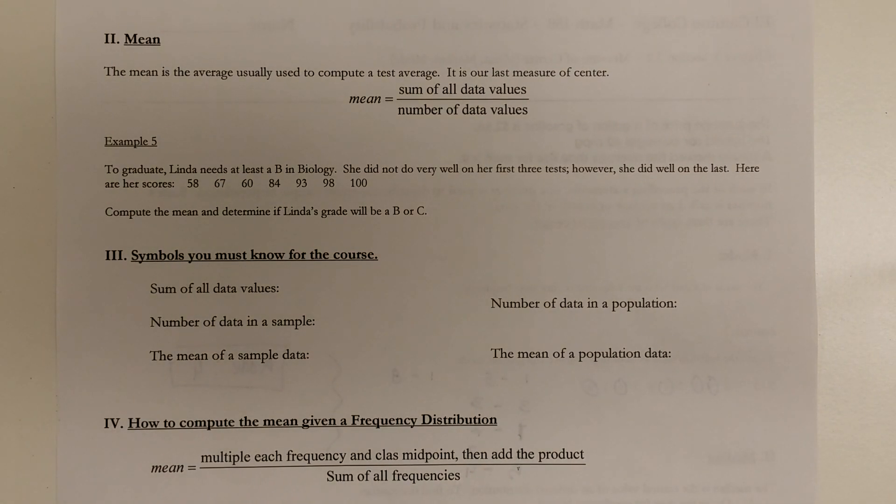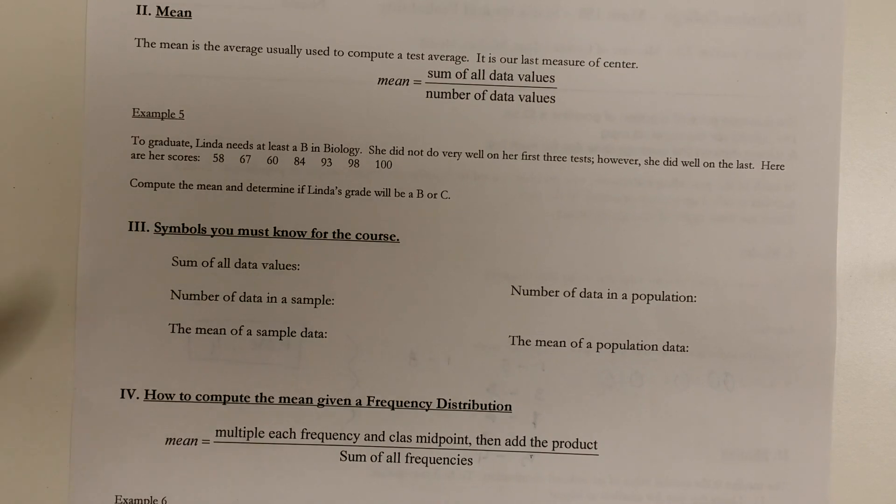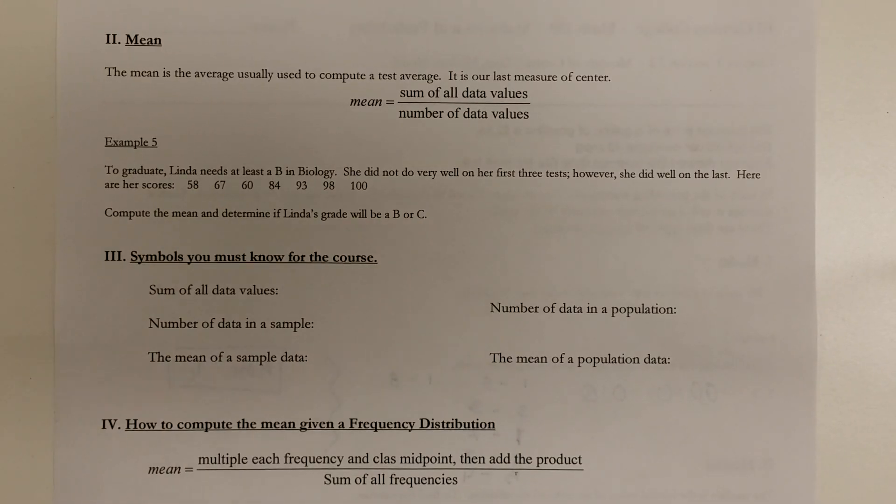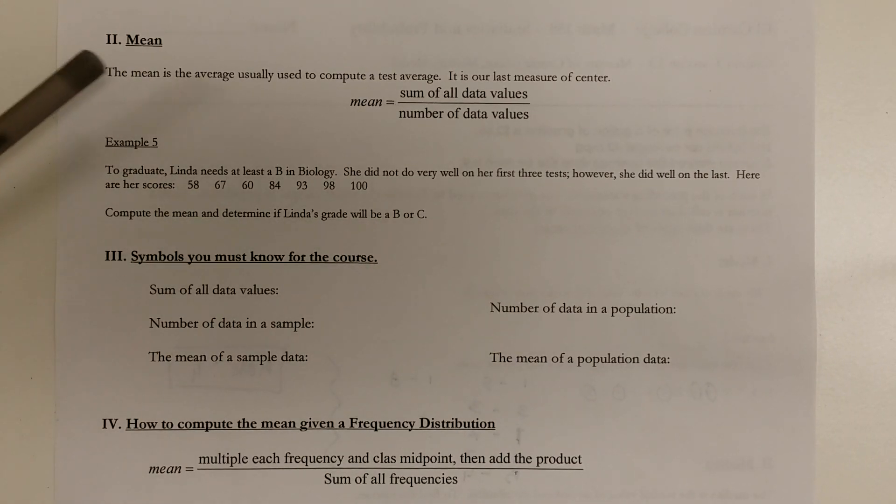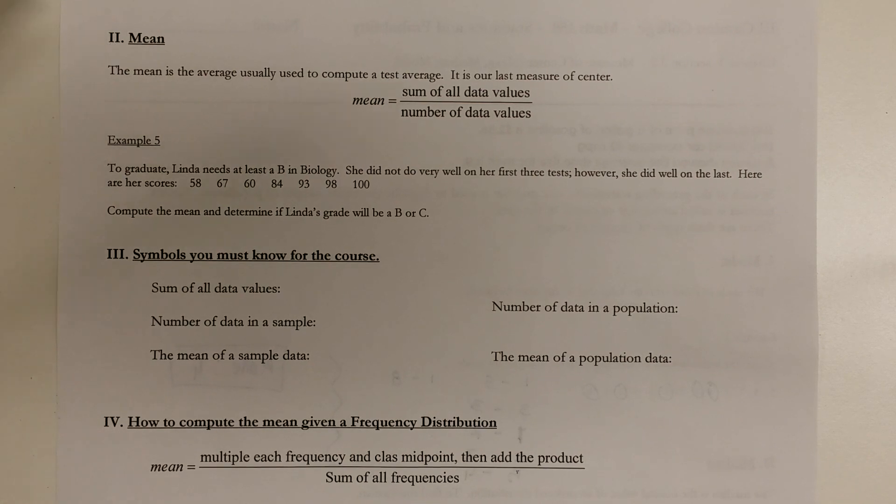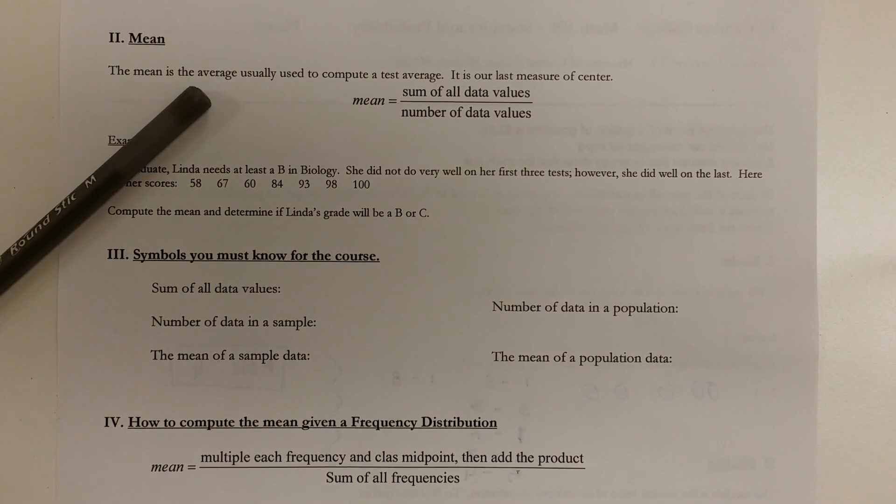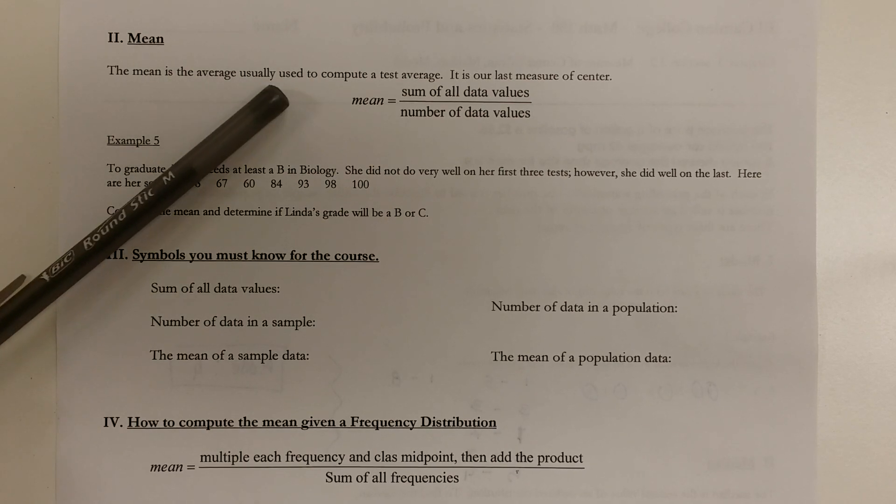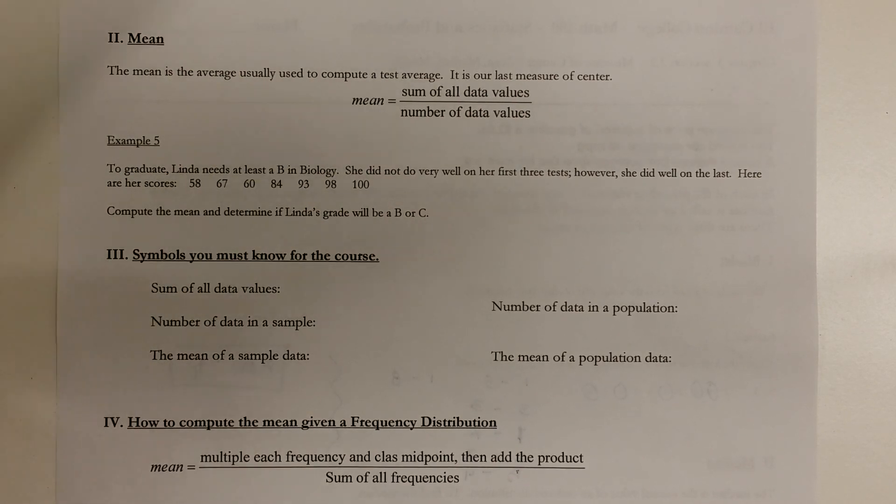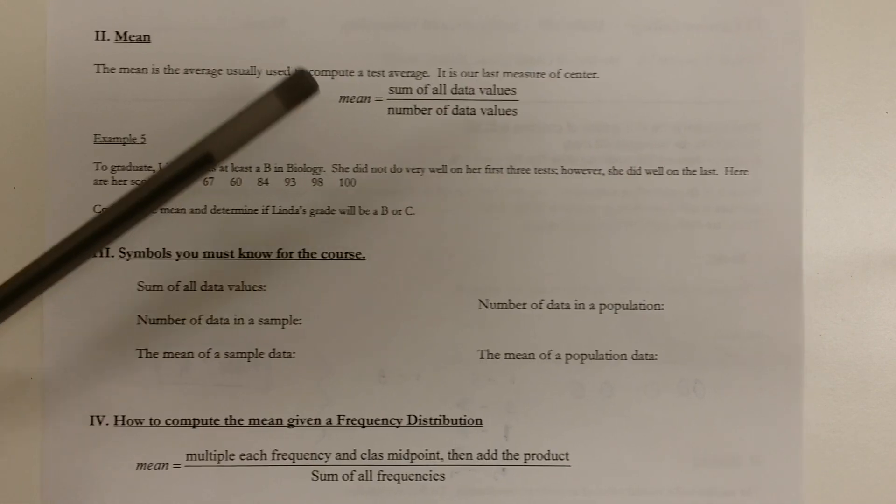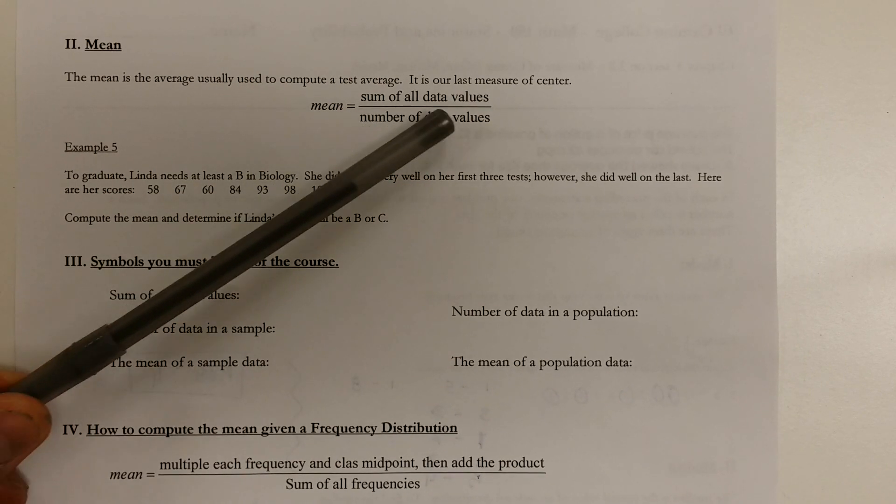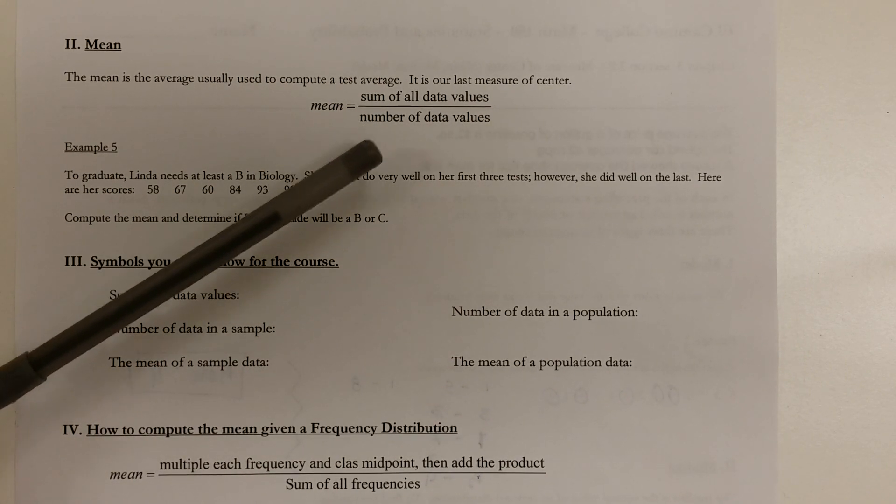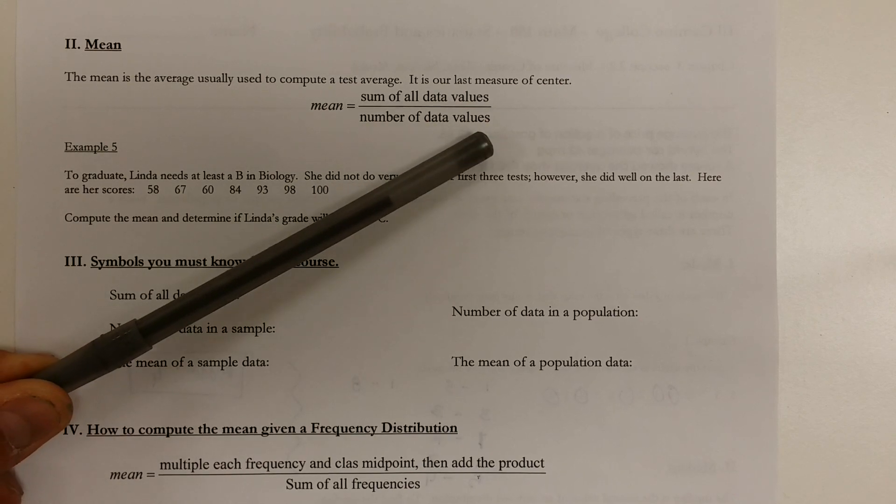Alright guys, the last measure of the center of our data that we're going to use a lot is what we call the mean. The mean is the average and the mean is used frequently to compute like test averages in a class. So to find the mean, we basically add up all the data values and then we divide that by the number of data values.